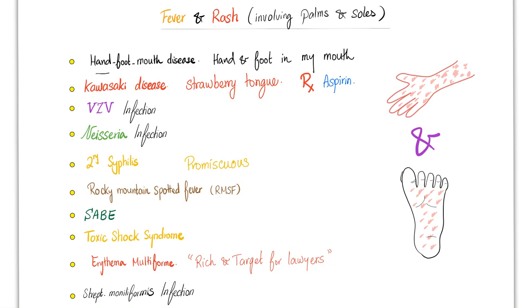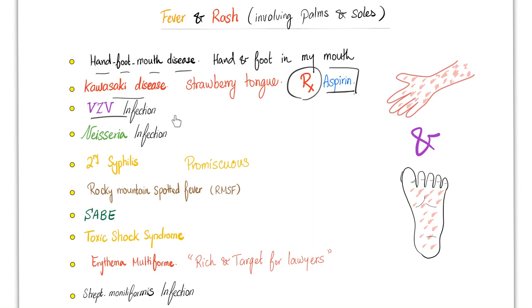When I was young, I used to put my hands and feet in my mouth — hand, foot, mouth disease. Speaking of my mouth, I had strawberry tongue. The doctor gave me aspirin, but before giving aspirin, the doctor made sure I did not have varicella infection. This is medically accurate: before giving aspirin to a Kawasaki patient, make sure they do not have varicella or influenza infection — kids should not receive aspirin anyway because it can lead to Reye's syndrome, which can be fatal. Varicella gave me chickenpox when young and shingles as an adult.